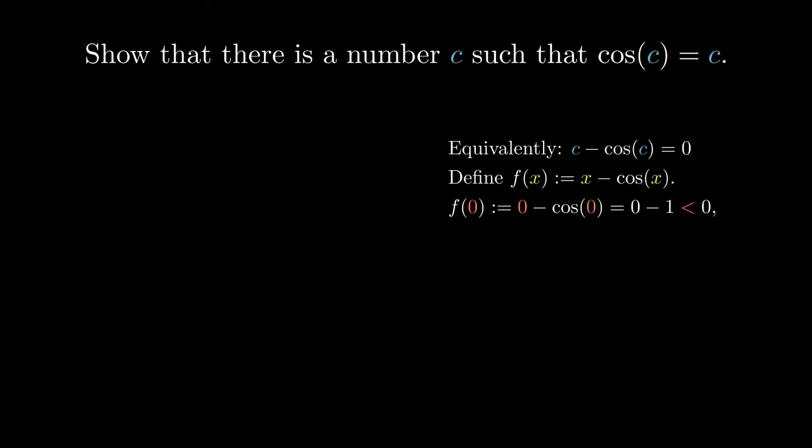We can draw the graph and plot the point as follows. Plugging in x equals 1 gives us 1 minus the cosine of 1, which is strictly greater than 1 minus 1, making it positive. We can plot f(1) on the graph as follows.